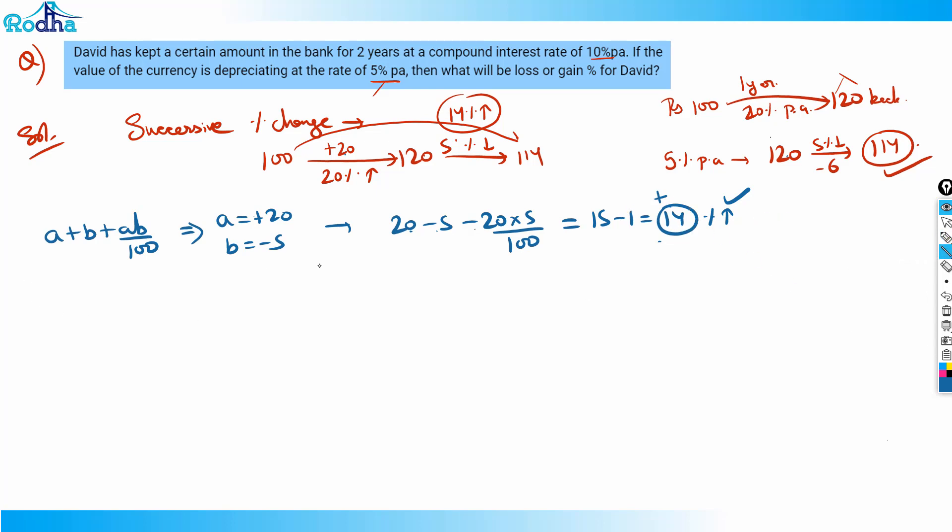Once you know this concept, you can solve this question. The compound interest for 2 years at 10% means 100 will increase by 10% two times - successive change of 10% twice should be 121. It should be 110 and then 10% again should be 121. Then the value of currency is depreciating at the rate of 5%. This is taught in my compound interest videos.